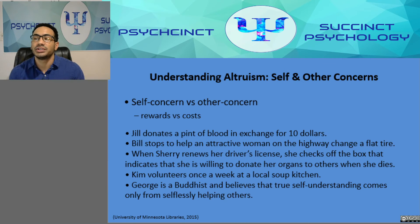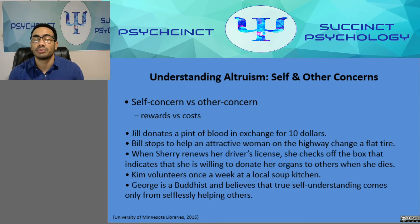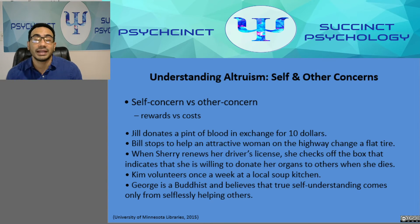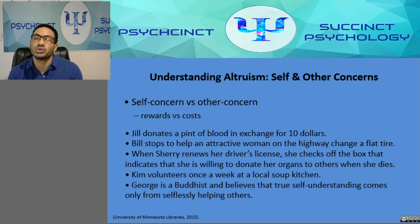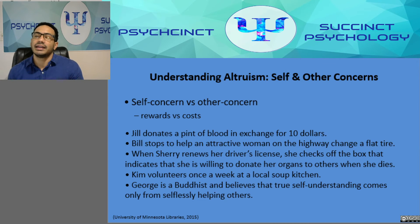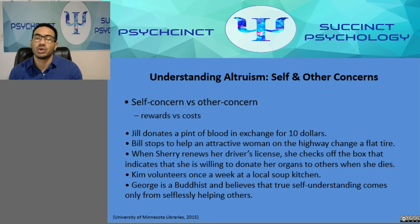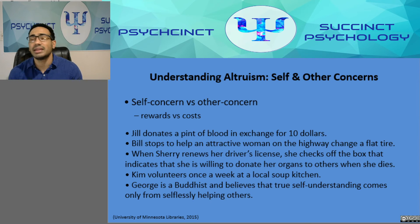Kim's volunteering could or could not be altruistic. If she volunteers to improve her CV or resume, then she's doing it in exchange for something. But if she volunteers simply because she enjoys helping at the soup kitchen, then it is altruistic. George's case is trickier — he is selflessly helping others, but he believes true self-understanding comes from it, meaning he is also trying to achieve something for himself. So his behavior may not be truly altruistic.